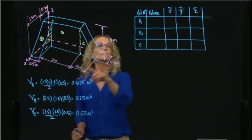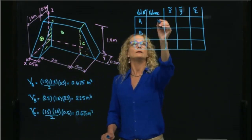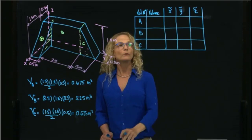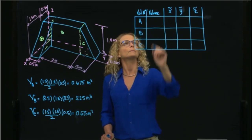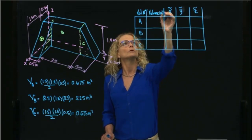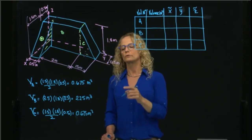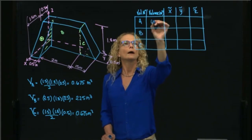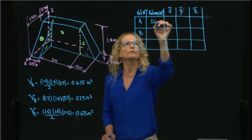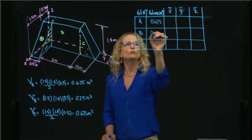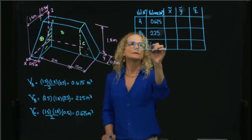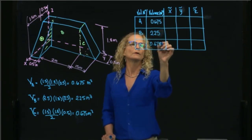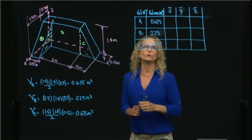Those are the values I will input into the table. The units are meters cubed, so I don't have to write the units in each box. The values are 0.675, 2.25, and 0.675, all meters cubed.